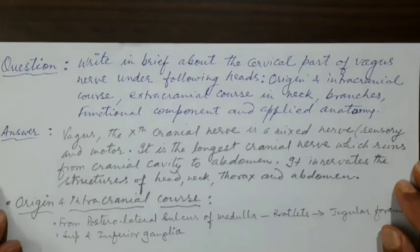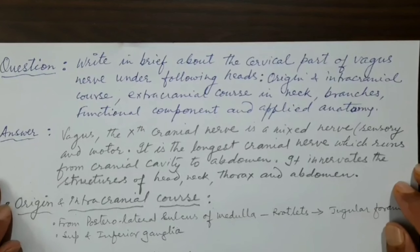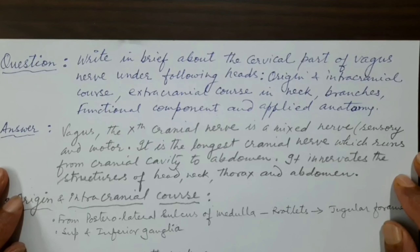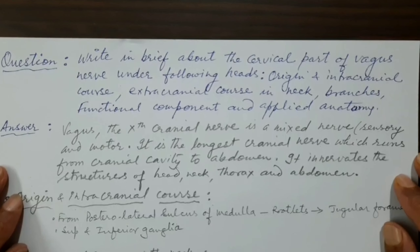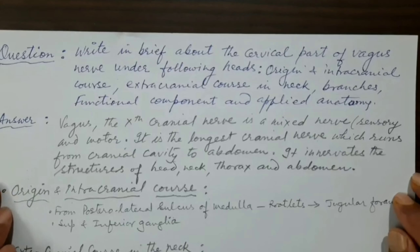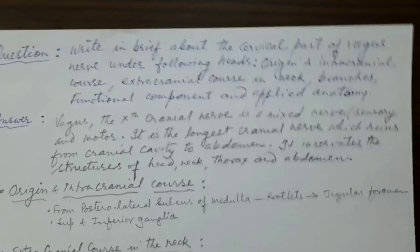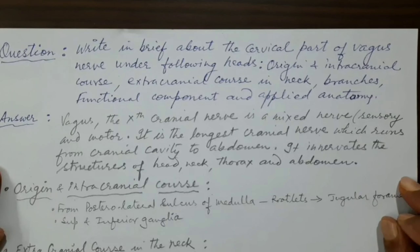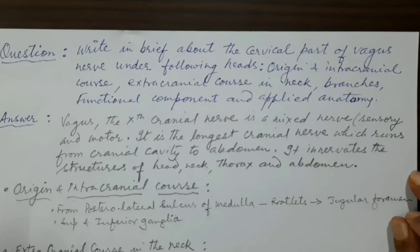Hello students. Yesterday we learnt about the glossopharyngeal nerve, that is the ninth cranial nerve, its extracranial course as well as its branches and applied importance. Today we will learn about the vagus nerve, which is the tenth cranial nerve.